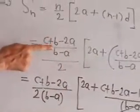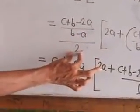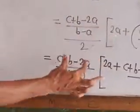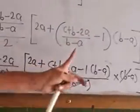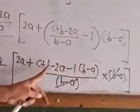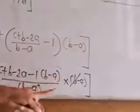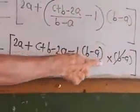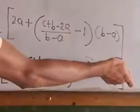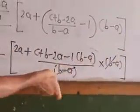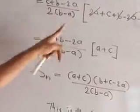The numerator B minus A and the denominator B minus A cancel, and dividing by 2. Therefore we get C plus B minus 2A upon 2 into B minus A, outside the bracket: 2A plus C plus B minus 2A minus 1 into B minus A upon B minus A. The B minus A terms cancel, leaving the bracket simplified.